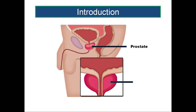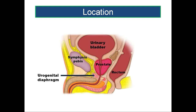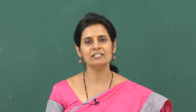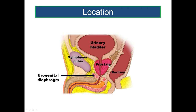It is present in the lesser pelvis. It is of the size of a chestnut, appearing like an inverted cone. It is compressed from above downwards, measuring about 3 centimeters in height, 4 centimeters in width at the base, and anteroposteriorly it measures about 2 centimeters in thickness.